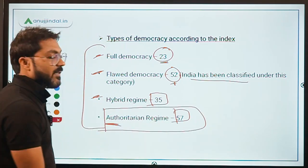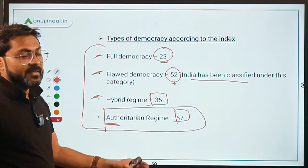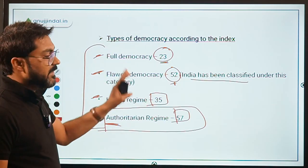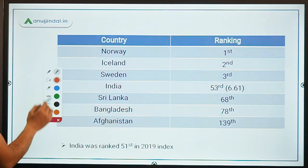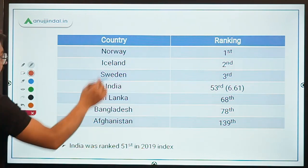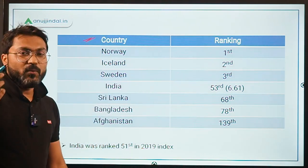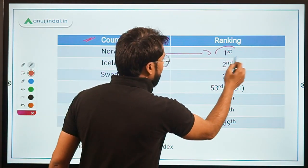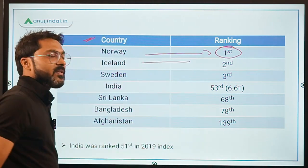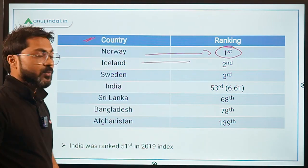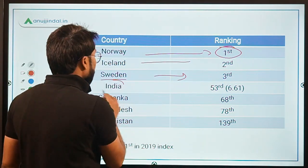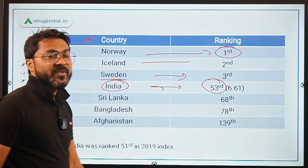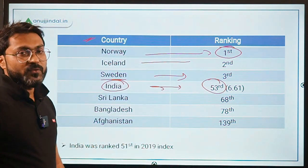Authoritarian regime has the highest number of countries among the categories. For the country rankings: Norway is number 1, Iceland is rank 2, Sweden is rank 3. India is ranked 53rd this year, down from 51st last year, meaning India's rank dropped by two positions. India's score is 6.61.